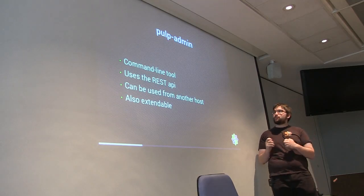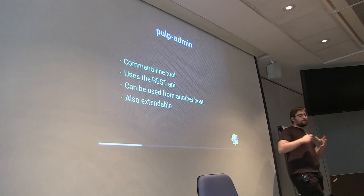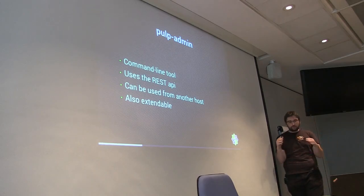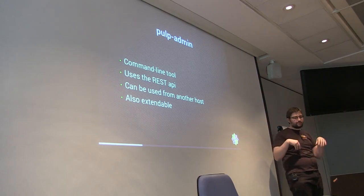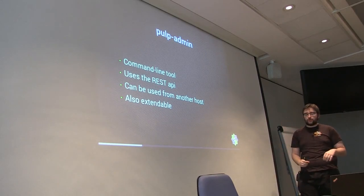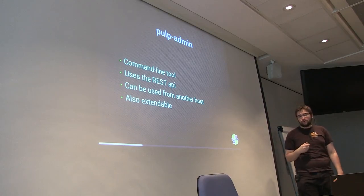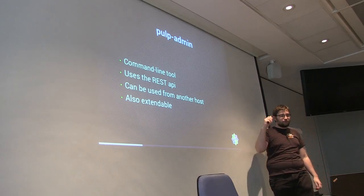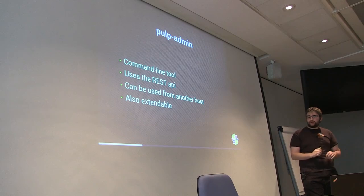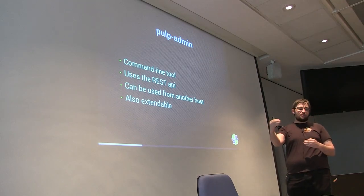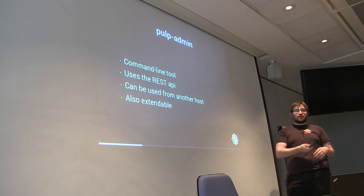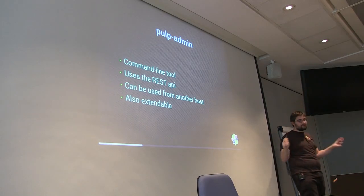Pulp is made of different components that you can scale. If your Pulp server needs to serve many nodes, you'll need to scale HTTP. If you sync a lot from upstream with many repo packages, you'll need to work on Mongo. If you have lots of uploads, you'll also need to work on Celery. If you start using Pulp in a standalone server, it will be slow — you have been warned. So let's start with Pulp admin, the command line tool provided by Pulp — it just makes REST API calls.